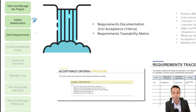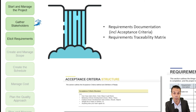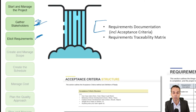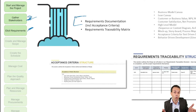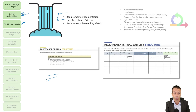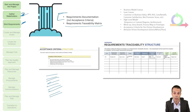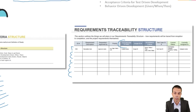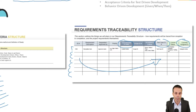Once we've got our stakeholders we want to gather requirements from them — maybe it's our customer, maybe it's our project sponsor, maybe it's a senior user, but we still need to gather requirements for what we're delivering. In a Waterfall project we might use requirements documentation — a big, detailed requirements document. We could also use the requirements traceability matrix, which has all the requirements the customers want and how they match up to the scope, test cases, and current status. It traces those requirements to their completion throughout the project.